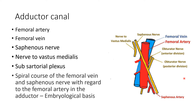The nerve to vastus medialis is the thickest muscular branch of the femoral nerve. It is lateral to the femoral artery and enters the vastus medialis in the upper part of the adductor canal. There is also a spiral course of the femoral vein and saphenous nerve in relation to the femoral artery in the adductor canal, which has an embryological basis — it is because of medial rotation of the lower limb during its development.